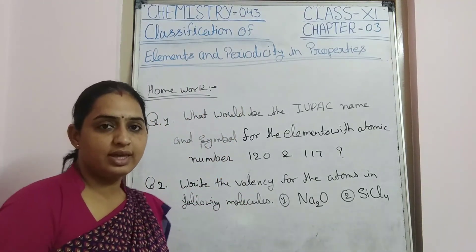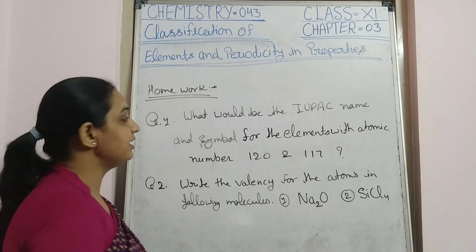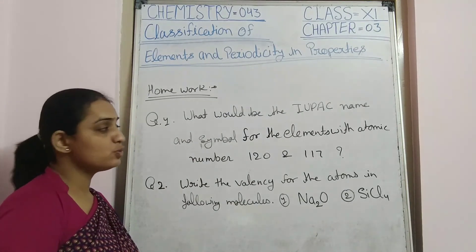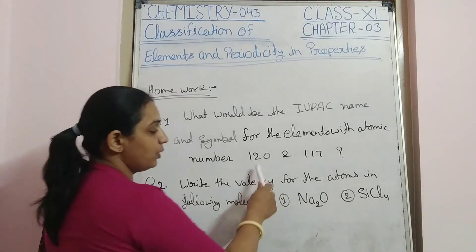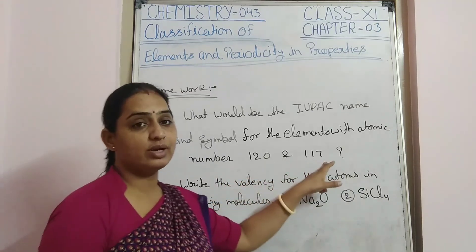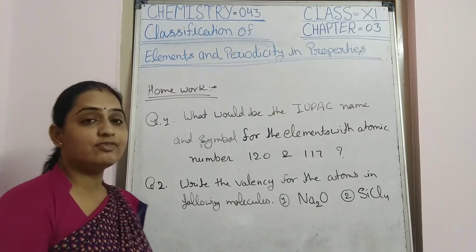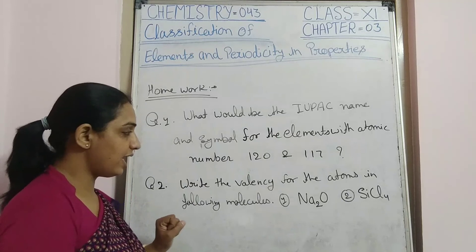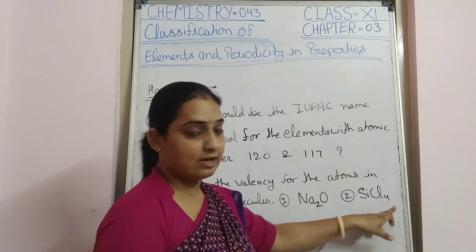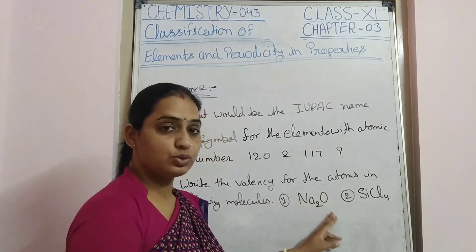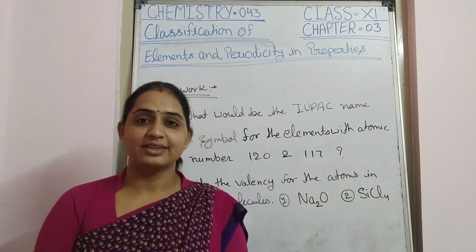Today's homework: Question 1 — What would be the IUPAC name and symbol for elements with atomic number 120 and 117? Question 2 — Write the valency for each element in the following molecules: Na₂O and SiCl₄. Thank you very much.